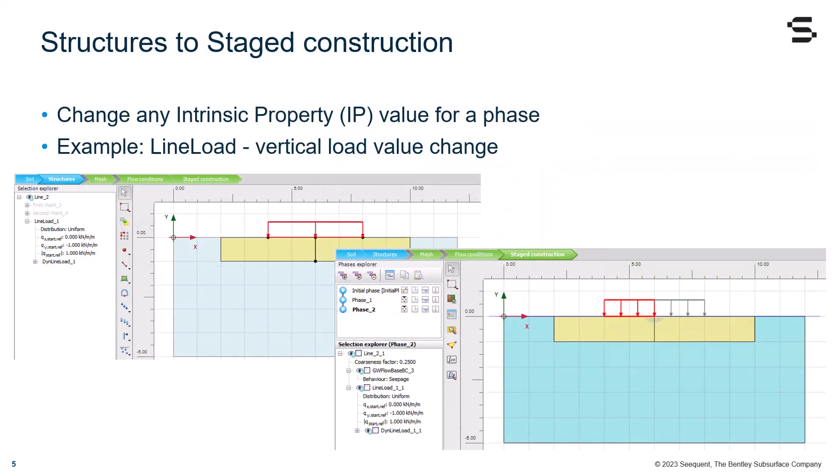Typically you would want to change a single value which is an intrinsic property of an object for a specific phase. This can be done in staged construction. Let's see the example of a line load that we added in structures mode as a single object. The idea is to change the value of the vertical load component in staged construction.